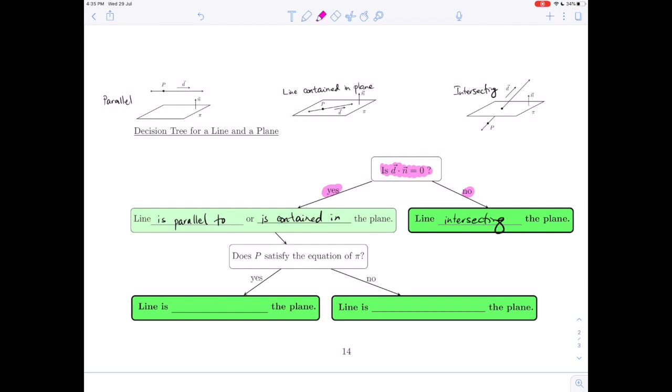The dot product here, the d vector and the n vector are not perpendicular in the intersecting case. So to go further in this case, to distinguish between parallel distinct or disjoint and the line being contained in the plane, we examined the point P.